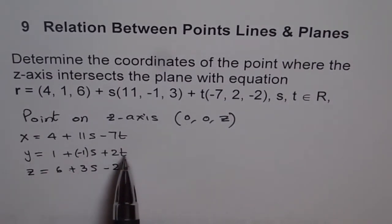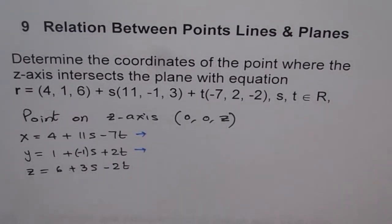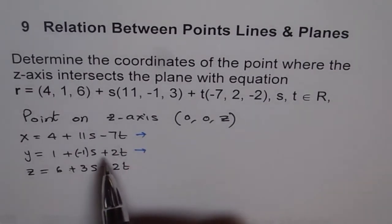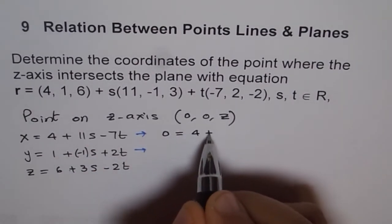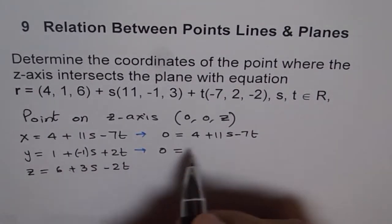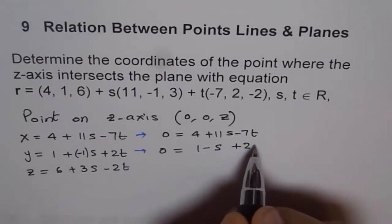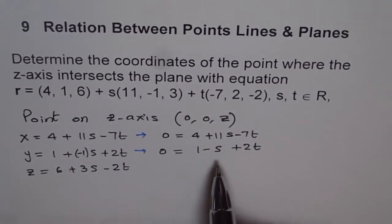Now if we want x to be 0 and y to be 0, then we can solve for them here. Let us look into these two equations. We will put x as 0 and y as 0 to try to figure out what s and t could be. So we will write 0 equals to 4 plus 11s minus 7t and 0 equals to 1 minus s plus 2t. From these two equations, we can eliminate or substitute. So here substitution seems to be a better option.